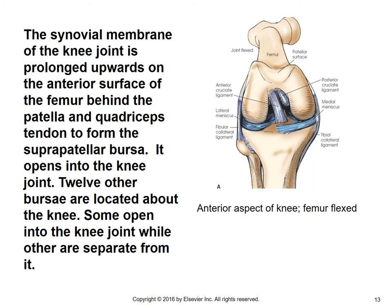Regarding the synovial membrane in the knee, we also talk about bursae — fluid-filled sacs. The synovial membrane of the knee joint is prolonged upwards on the anterior surface of the femur behind the patella and the quadriceps tendon to form what's called the suprapatellar bursa. It opens into the knee joint. Notably, 12 other bursae are located about the knee — some open into the knee joint, while others are separate from it.